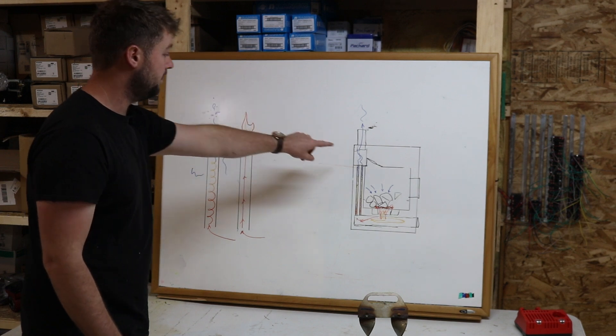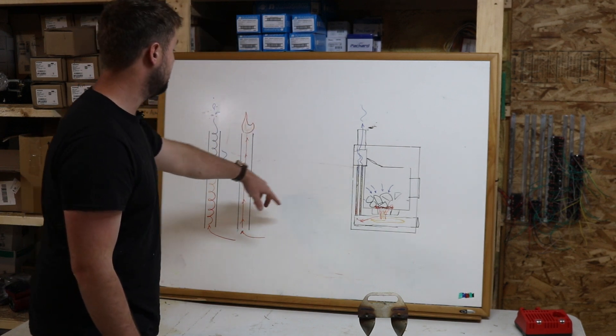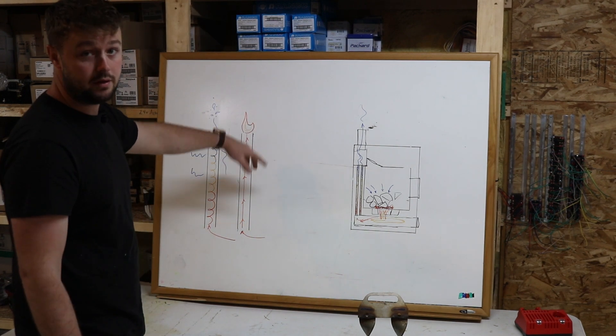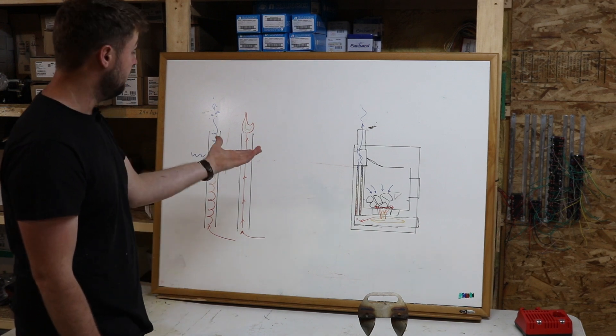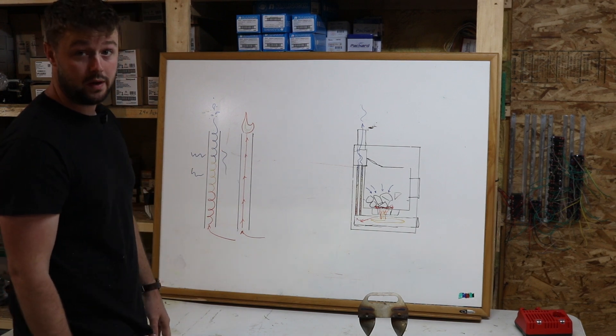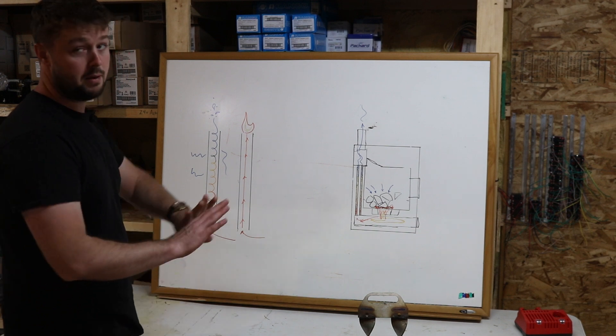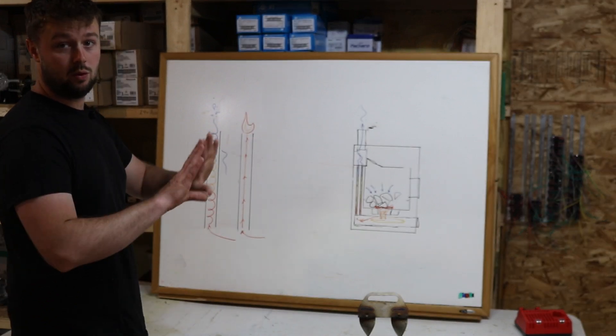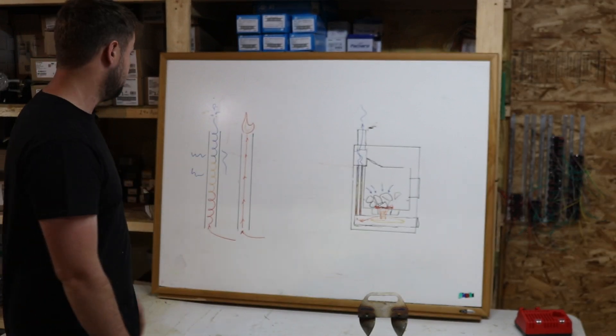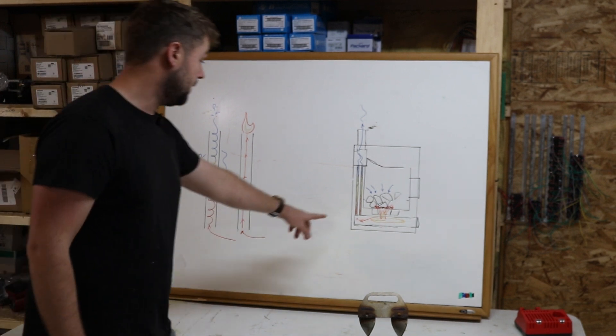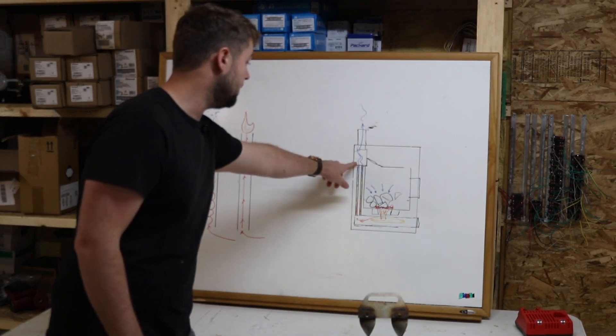So with the fan being mounted up above these exhaust tubes, having 1,300 degree air coming out of there is going to just torch your fan and burn paint off the door of your exhaust chamber. So we've got to cool this stuff down by the time it gets from here to here.